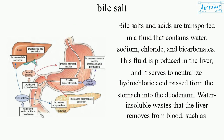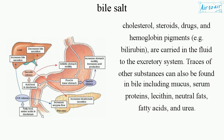Bile salts and acids are transported in a fluid that contains water, sodium chloride, and bicarbonates. This fluid is produced in the liver and serves to neutralize hydrochloric acid passed from the stomach into the duodenum. Water and soluble wastes that the liver removes from blood — such as cholesterol, steroids, drugs, and hemoglobin pigments like bilirubin — are carried in the fluid to the excretory system. Traces of other substances can also be found in bile, including mucus, serum proteins, lecithin, neutral fats, fatty acids, and urea.